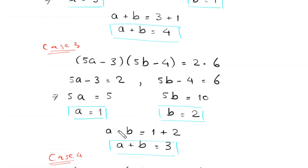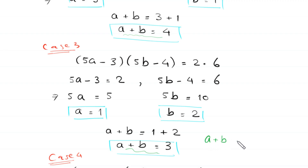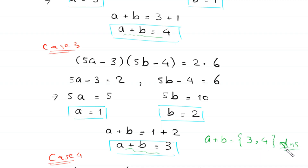We get 2 solutions for a plus b: 4 and 3. So the final set of solutions is a plus b equals {3, 4}. This is the final answer of this problem.